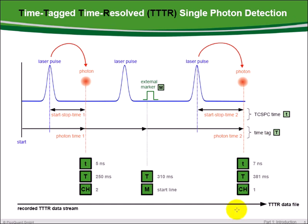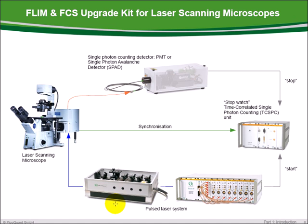This TTTR data format therefore collects the complete measurement information. In order to measure a FLIM image with a laser scanning microscope, pulsed lasers of different colors are combined in a laser combiner. The pulsed light is guided through a single-mode fiber to the microscope, where the fluorescence is excited in a sample. The fluorescence light is then delivered through a multimode fiber to a very sensitive single-photon detector, which creates a stop signal for the timing unit.